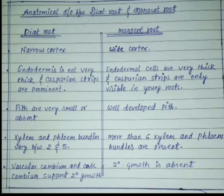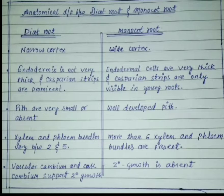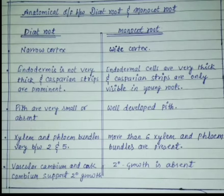If we talk about the endodermis, it is very thick in monocot root, but in the case of dicot root it is thick, but not very thick. Casparian strips are prominent in dicot root, but in the case of monocot root they are found only in the young roots.